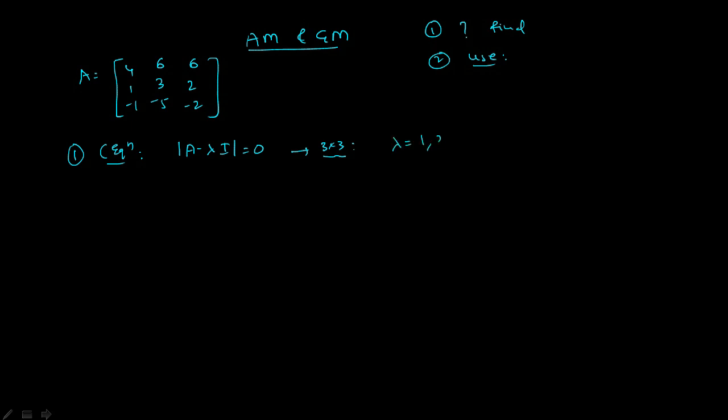After doing all the calculations, the lambda values you will get are 1, 2, and 2. Now if you don't know how to do this first step, please watch my previous video, then you can get this result. Now let's move forward to the main topic of AM and GM.